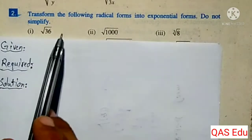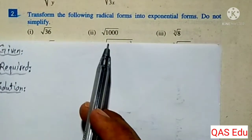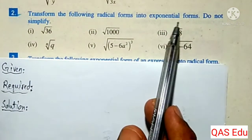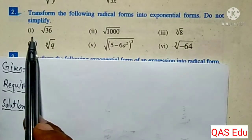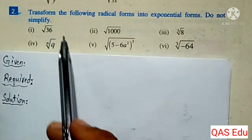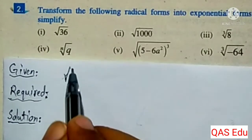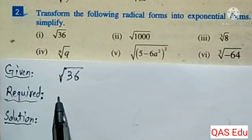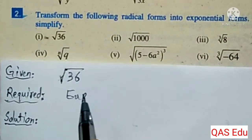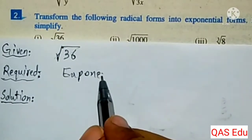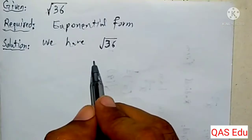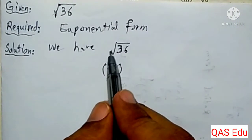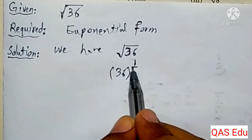Question number two: transform the following radical forms into exponential form, power form. Do not simplify, or simplify as required. We have the square root of 36. So 36 is the radicand, and we need to express it as 36 to the power of 1 over 2.